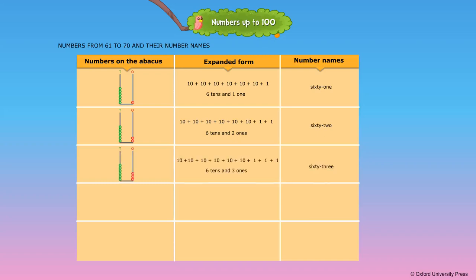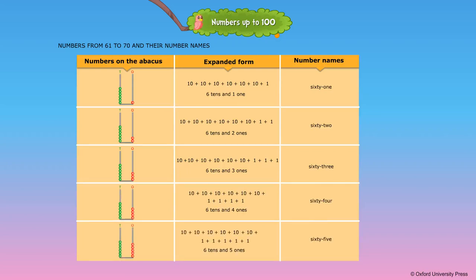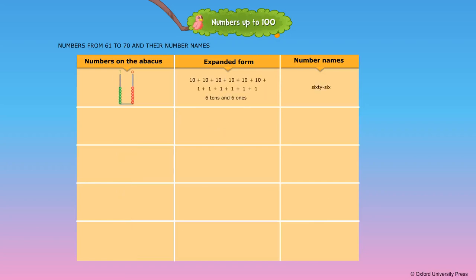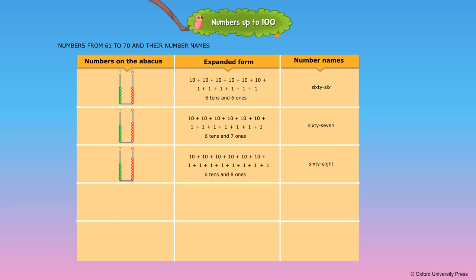6 tens and 3 ones — the number name is written as 63. 6 tens and 4 ones — the number name is written as 64. 6 tens and 5 ones — the number name is written as 65. 6 tens and 6 ones — the number name is written as 66. 6 tens and 7 ones — the number name is written as 67. 6 tens and 8 ones — the number name is written as 68. 6 tens and 9 ones — the number name is written as 69.